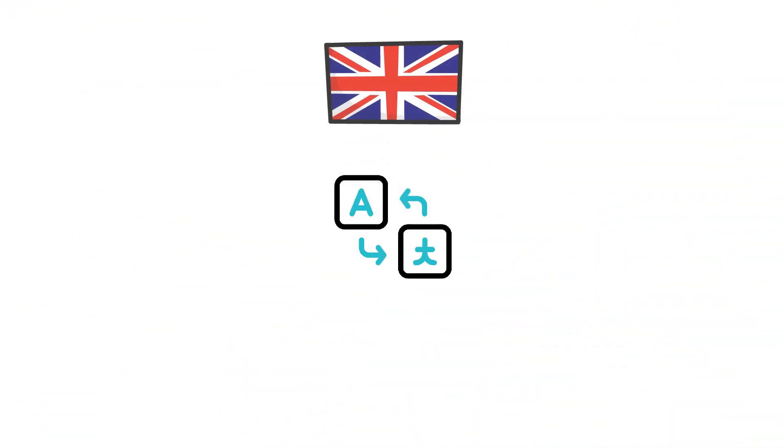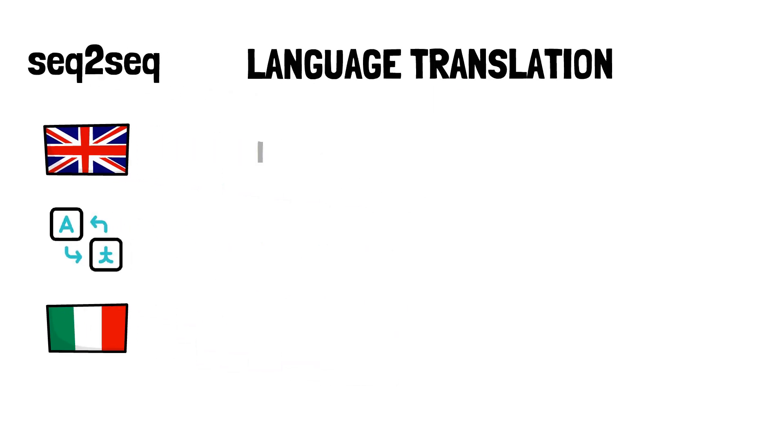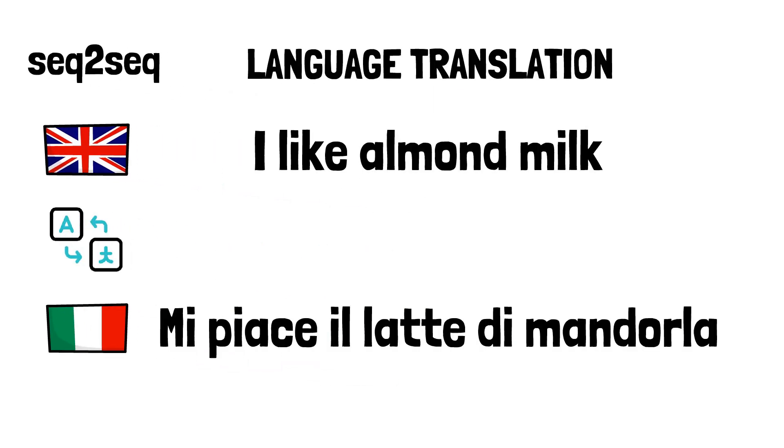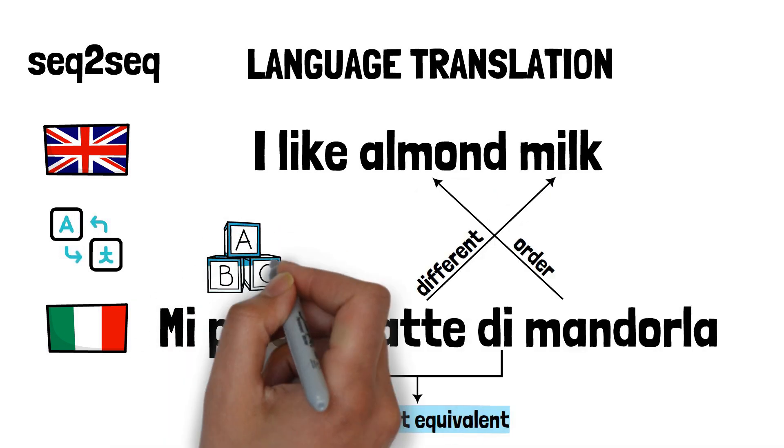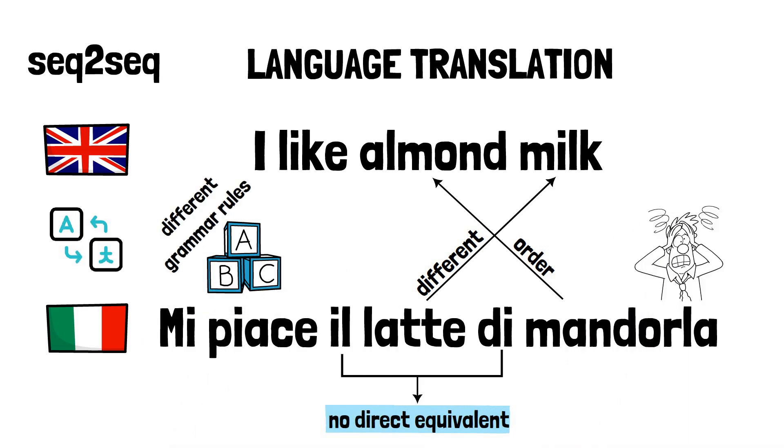Translating a sentence in a different language is a sequence-to-sequence task. The core challenge is that words in one language don't always have a direct equivalent in another. Moreover, word order and grammar structures can vary dramatically, which makes aligning the input and output sequences a very complex task.